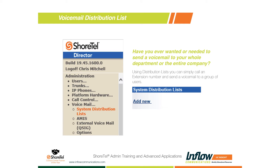Today we're going to be talking about system distributions, which are controlled by IT staff in ShoreTel Director. The second way is in your Communicator, under voicemail — users can actually create their own personal distribution list to send voicemails out. Those are usually more departmental. Both work the same way. The advantage of using the system distribution list is it gets an extension number assigned to it, so you simply call an extension number, leave a voicemail, and 20 or 100 users — whatever you want — all get notified.